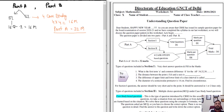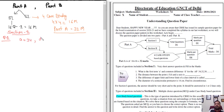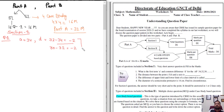Question 1: What is the first term 'a' and the common difference 'd' for the AP: 34, 32, 30, and so on? The first term a = 34. The common difference d = 32 − 34 = −2. Similarly, 30 − 32 = −2. So the common difference is −2.